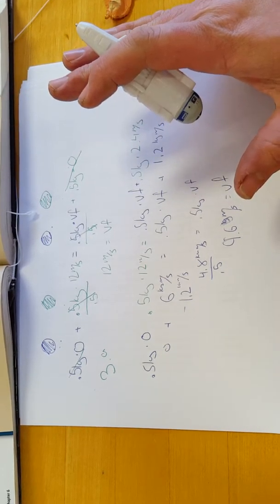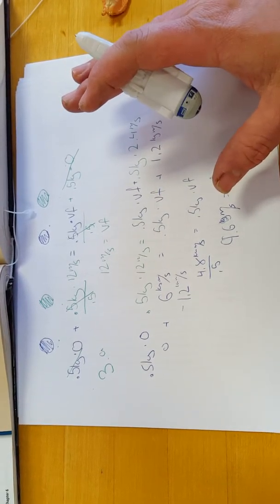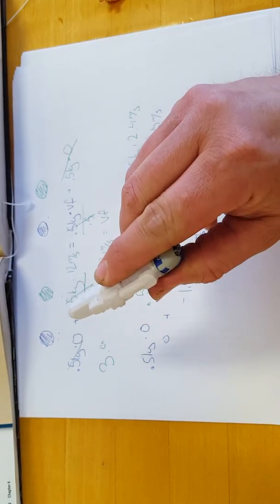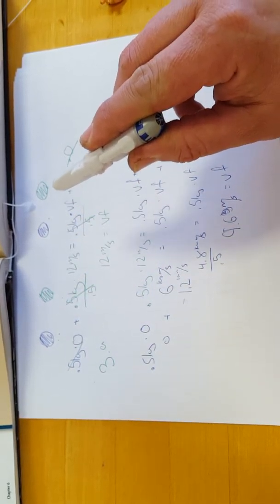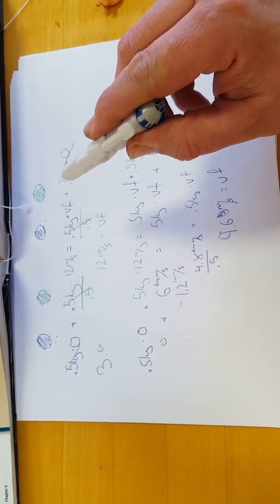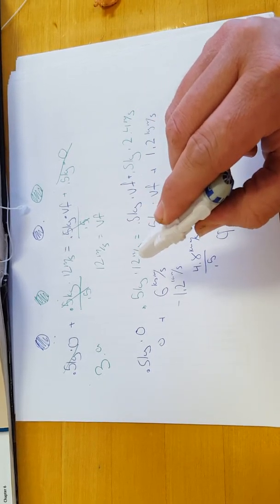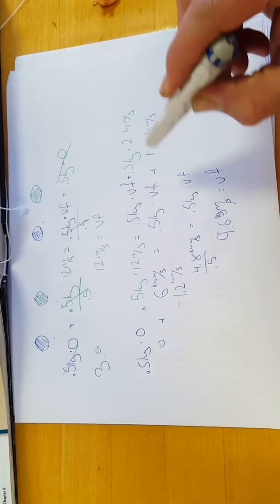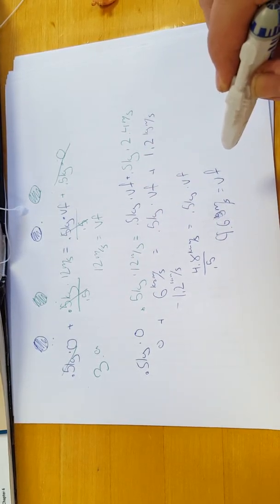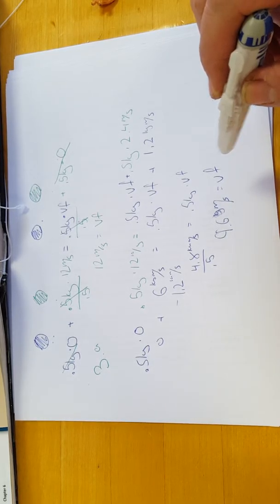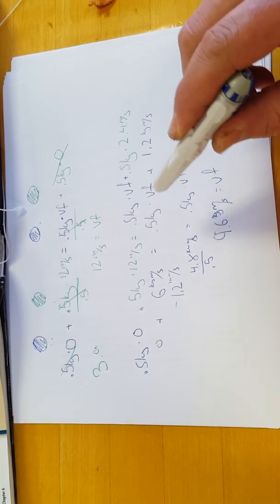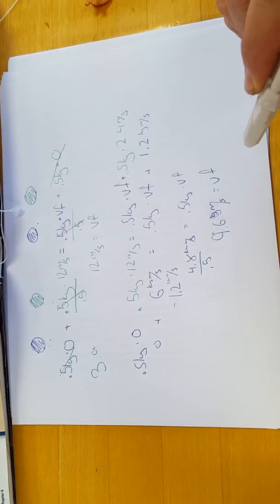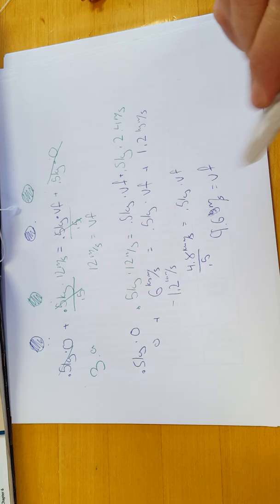So when you're doing these conservation of momentum problems, the initial momentum equals the final momentum total. Obviously you can see here this ball had all the momentum to start, both of them had some of the momentum at the end. This one had 4.8 of it, this one had 1.2 of it, but the total still adds up to the six over here.